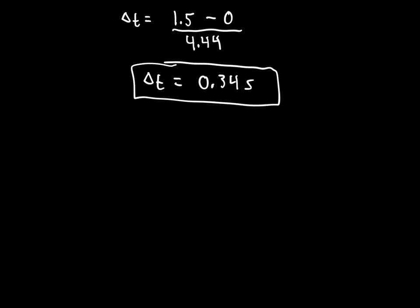That's how we do Part A. For Part B, we need to find change in theta — the angle swept. That's the missing piece of information from our chart.